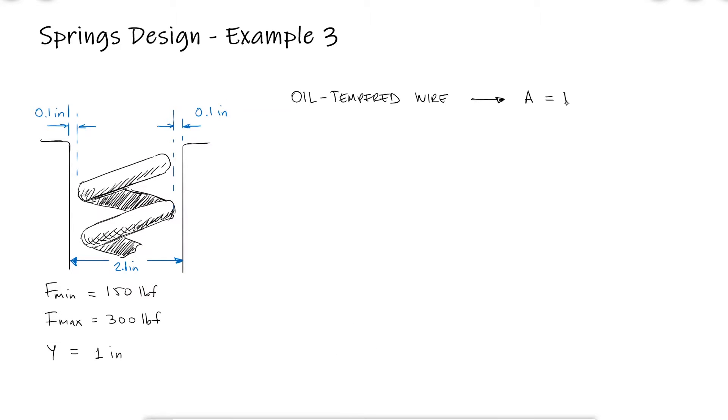If the spring uses oil-tempered wire with squared and ground ends, and using a spring index of 7, is it possible to design a spring that meets all of our design requirements?